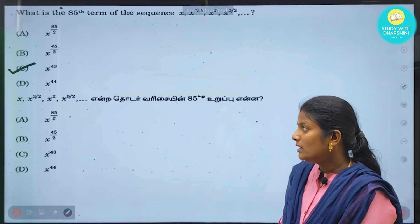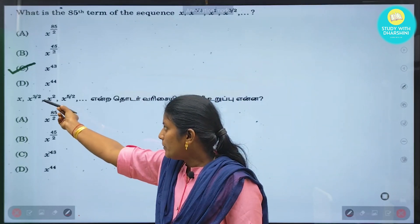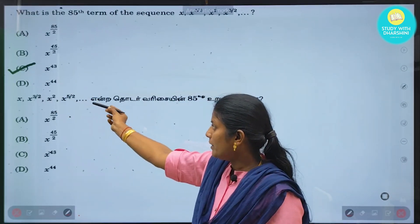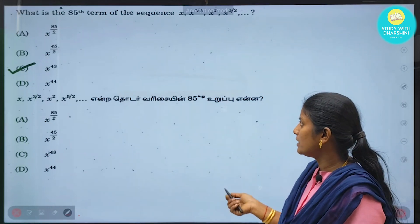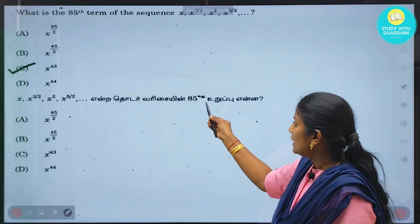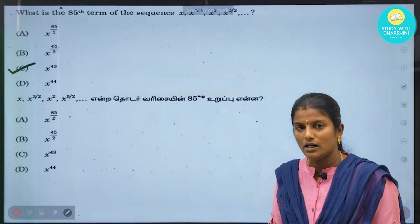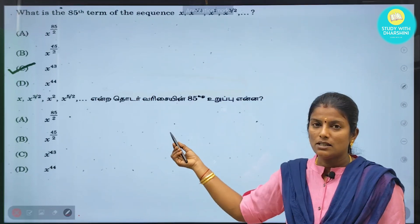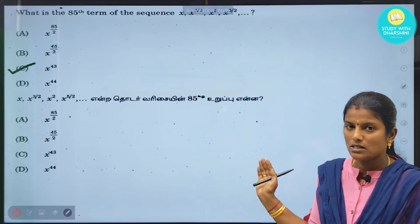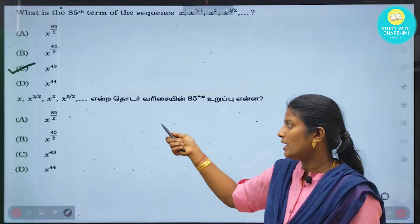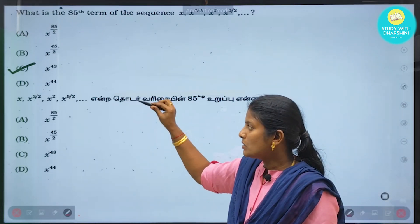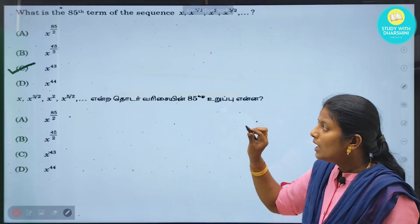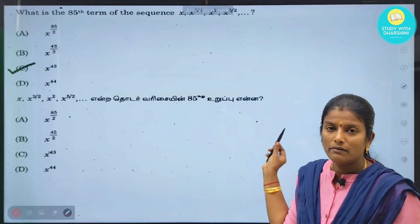Next question: the sequence x, x^(3/2), x^2, x^(5/2), etc. What is the answer? If you use the AP formula on this sequence, notice the numbers are in x's power. So you can solve by looking at the power values.